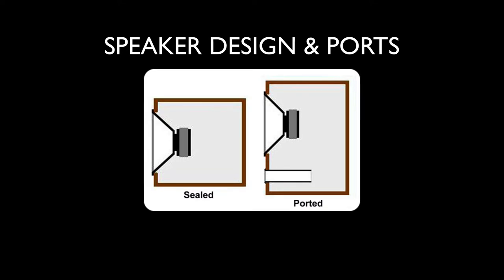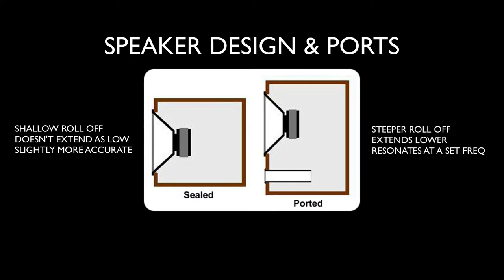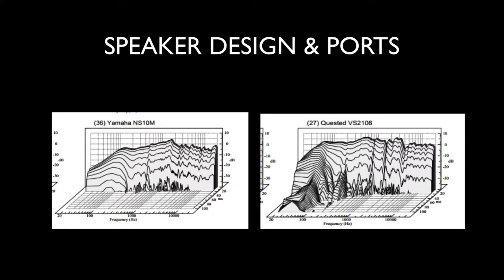With sealed and ported designs there's a bit of a trade-off. A sealed design is going to have a much more gentle dip when it gets to the frequency cut-off — around 40–50Hz it's just going to gently tail off until eventually it can't reproduce those frequencies. It's going to be more accurate but it won't have that low extension we need. Whereas in a ported design, the port is specifically designed so it resonates around a certain frequency — usually around the 40Hz mark for near-fields — which extends the bass slightly. It will extend the bass down to say 35–40Hz and then sharply slope off, so it's slightly less accurate but it does give you bass at that level.